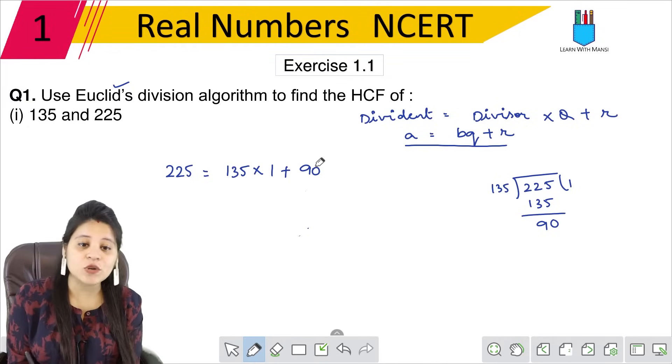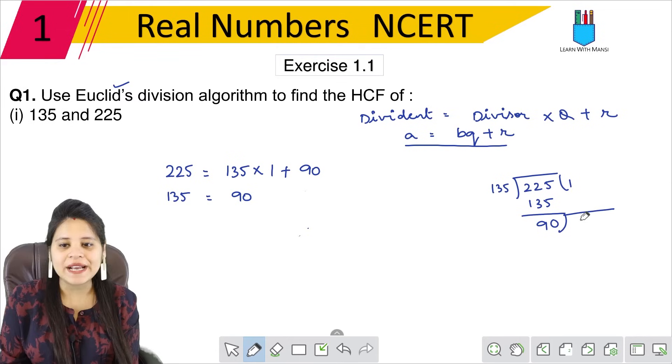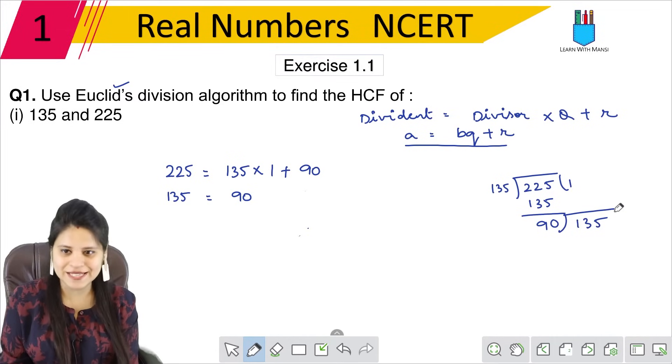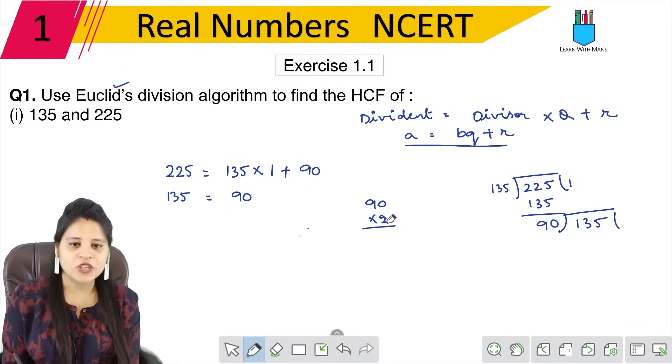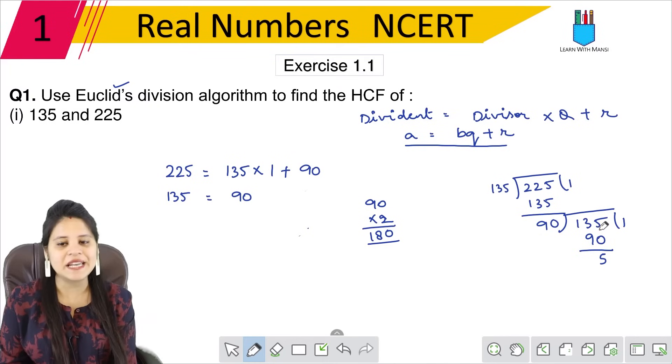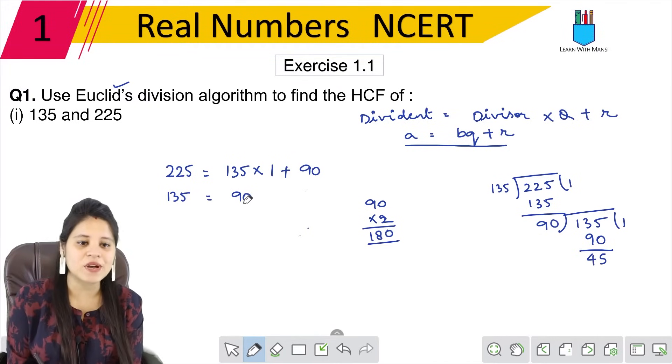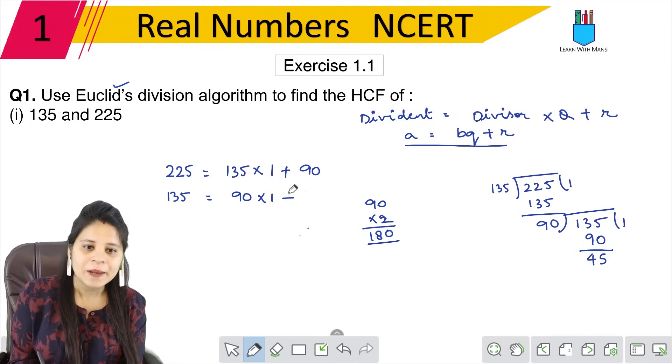Next step, we will continue until remainder is 0. Now we divide 135 by the remainder 90. So 90 into 2 would be too much, so 90 into 1 is 90. Subtracting, we get 45. So now I can write 135 equals to 90 multiplied by 1 plus 45.